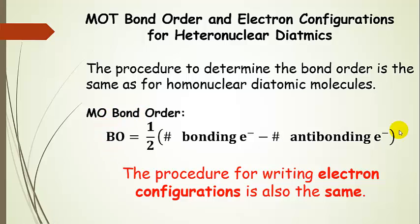So the procedure for writing molecular orbital electron configurations is also the same. So you fill the molecular orbitals from lowest to highest energy, unpairing where appropriate, following Hund's rule, and then you write the electron configurations based on the electrons in those molecular orbitals as you go up the correlation diagram. So it's exactly the same as what we did before.